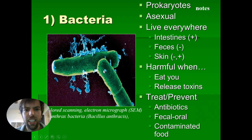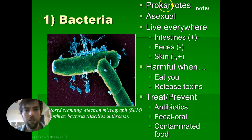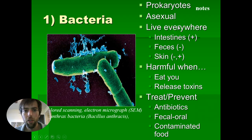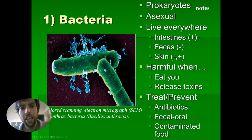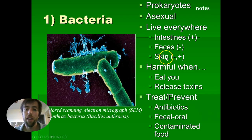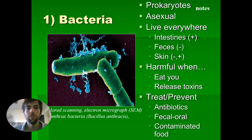Bacteria. This slide is going to help us fill out the whole first row for bacteria, except for the examples. Bacteria are P for prokaryote. You can abbreviate asexual for how they reproduce. They tend to live everywhere. And because they live everywhere, sometimes it's good that we have bacteria and sometimes it's bad. For instance, it's good to have bacteria in our intestine — it helps us digest food. And our skin has both good and bad bacteria. The good bacteria chill out on your skin and sort of keep the bad bacteria from moving into the neighborhood.